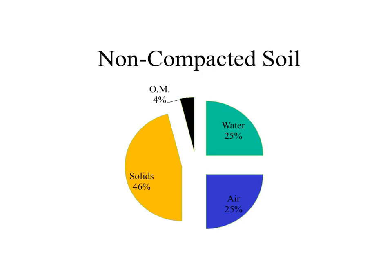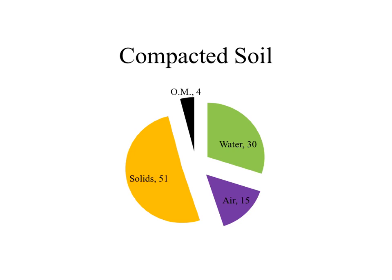In this pie chart we can see the major components that make up soil and the relative proportion of each. Taking that same soil and compacting it, we see major changes: air porosity decreases from 25 to 15 percent, while the amount of water held increases, as does the solids — which makes sense as you compress the solid particles, the clays, silts, and sands, closer together.